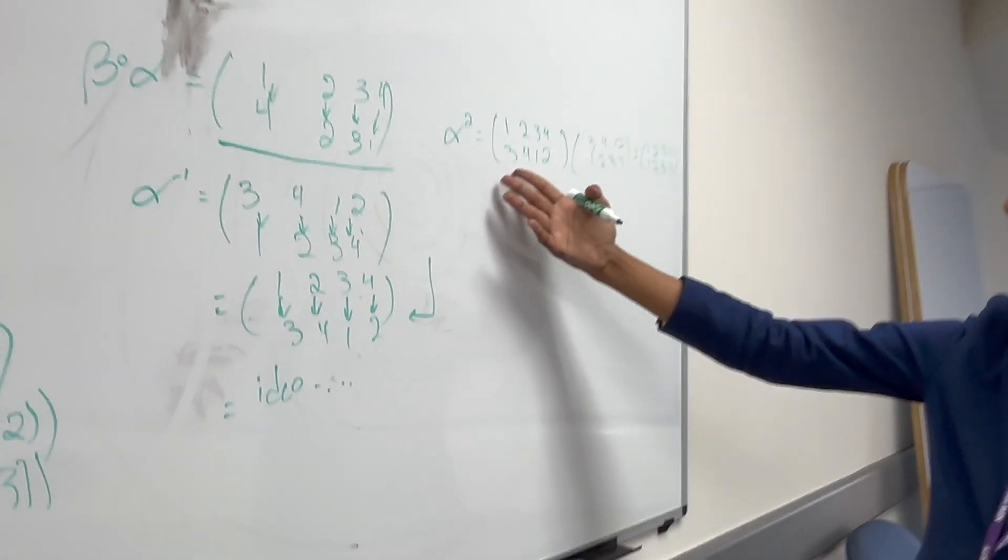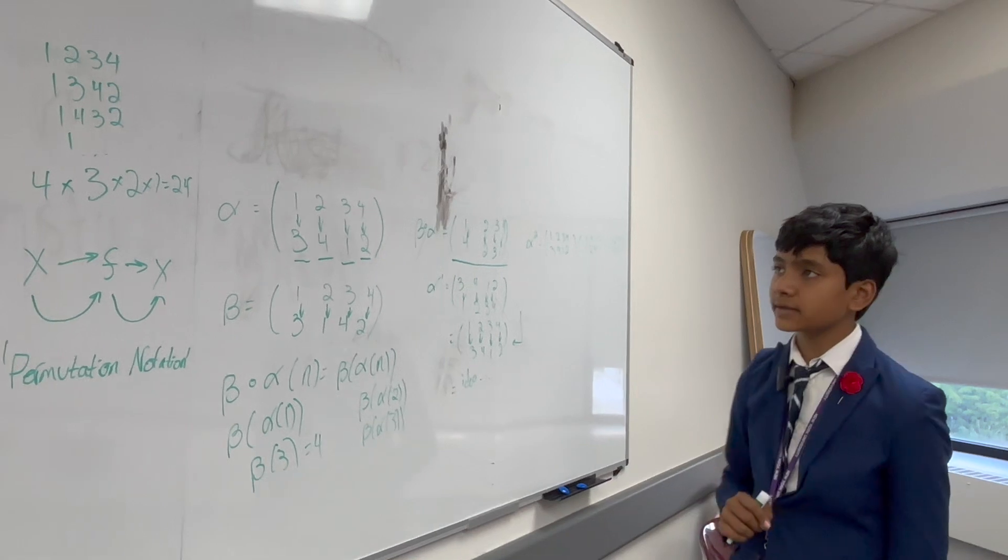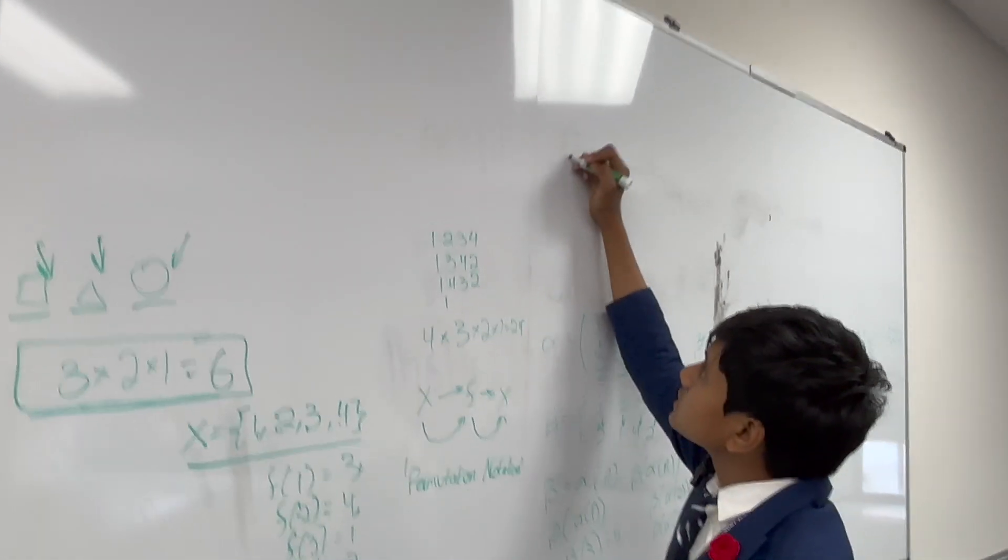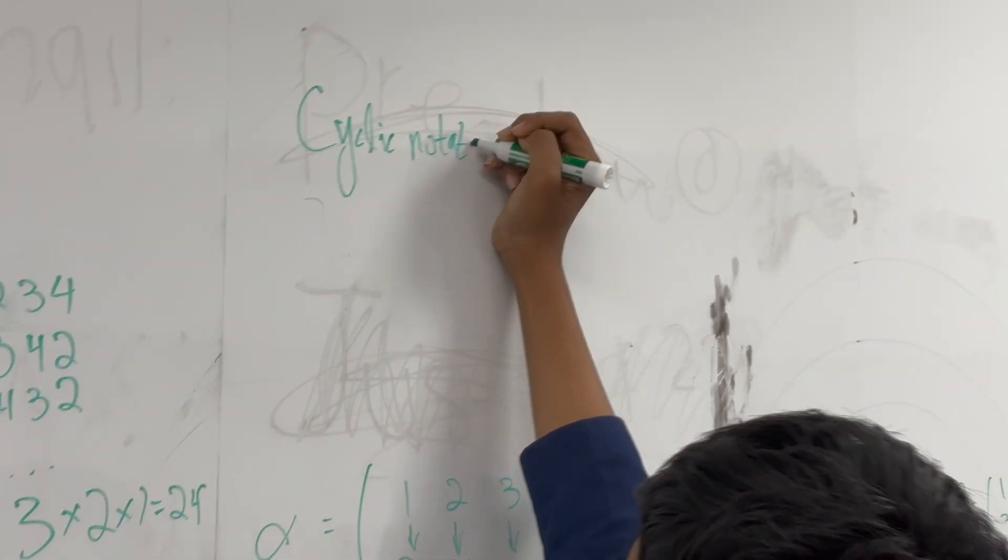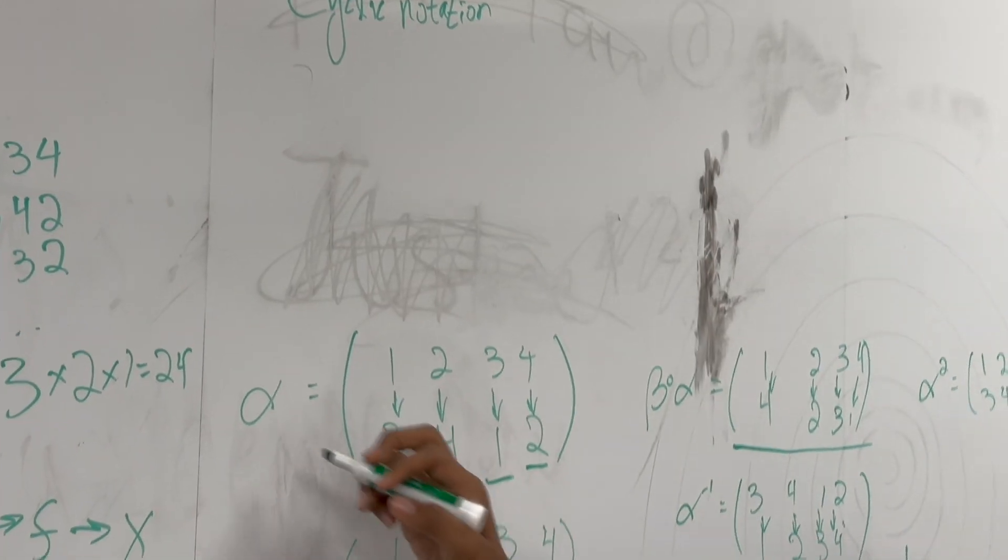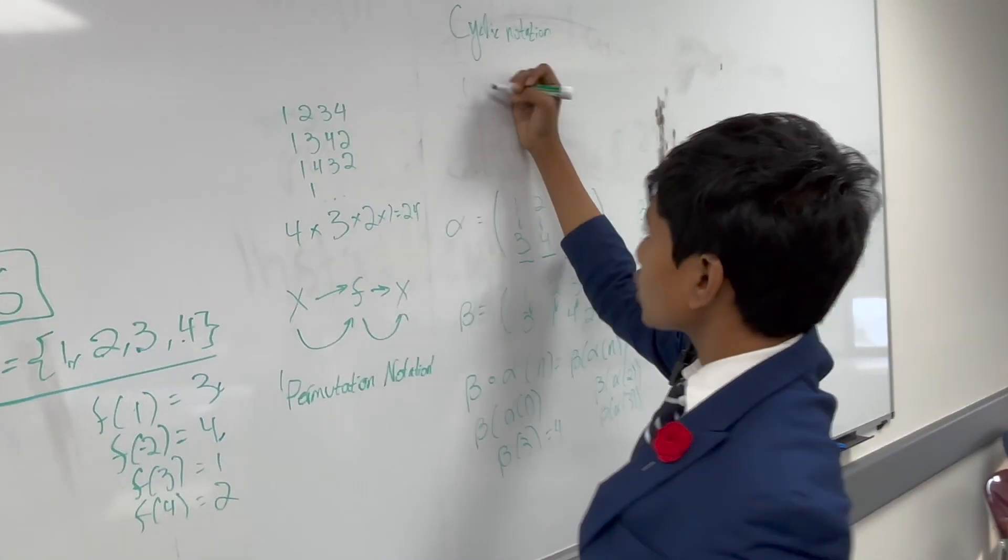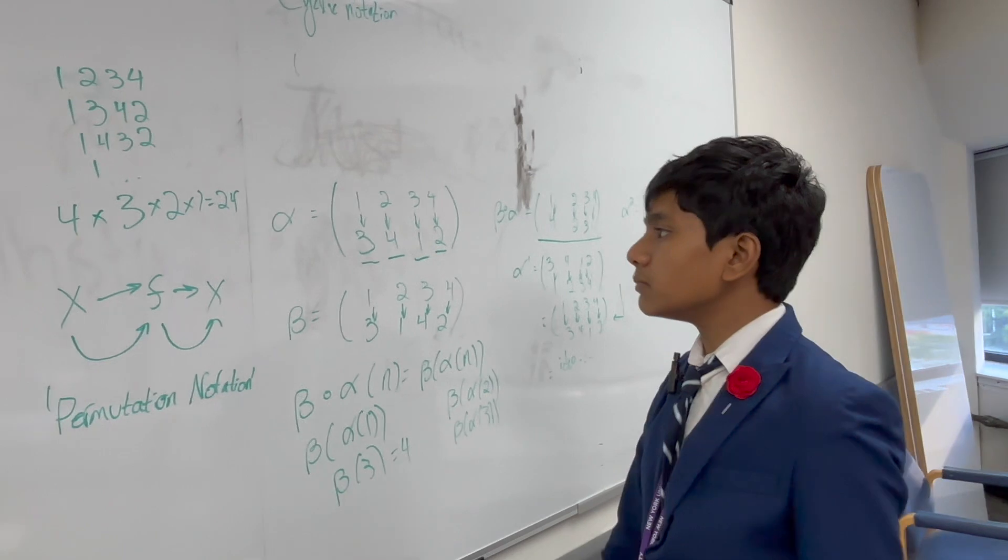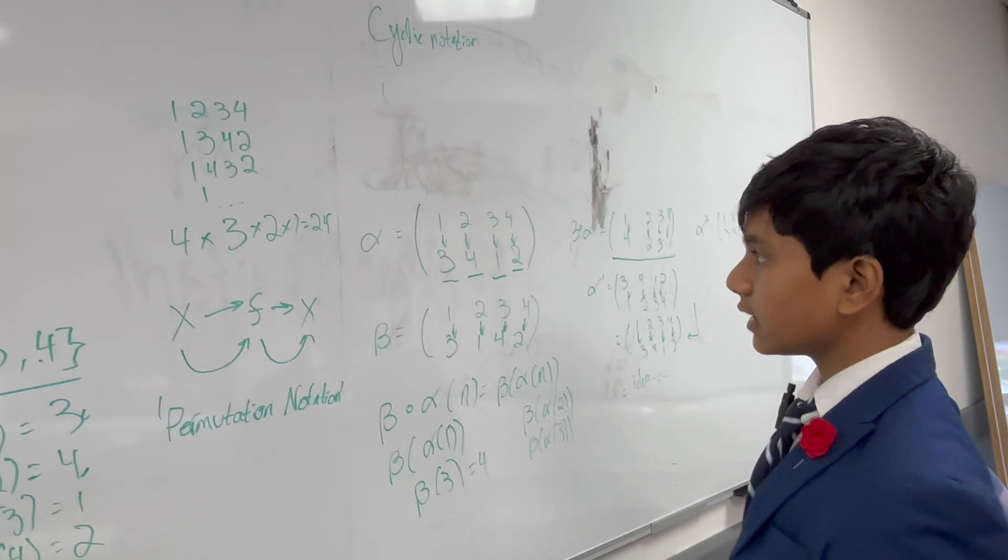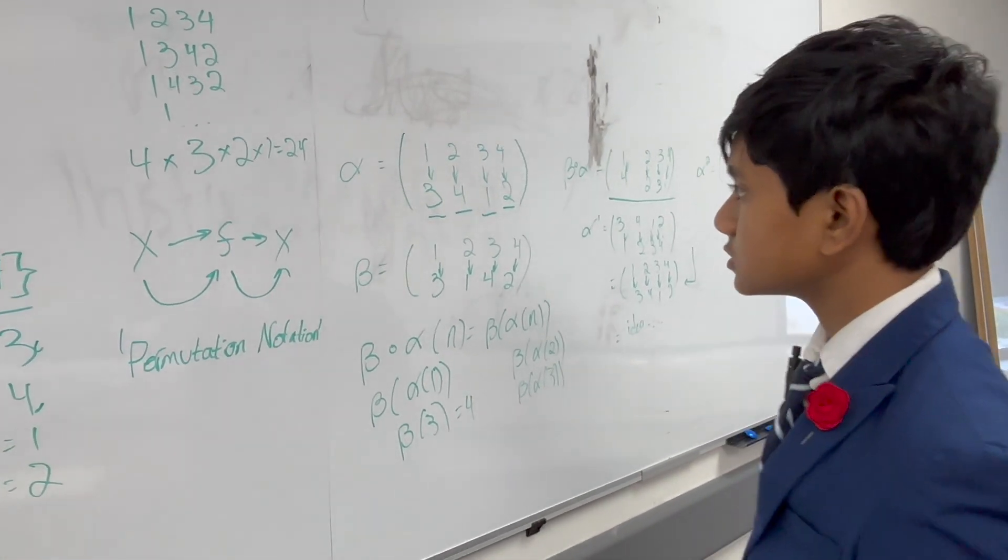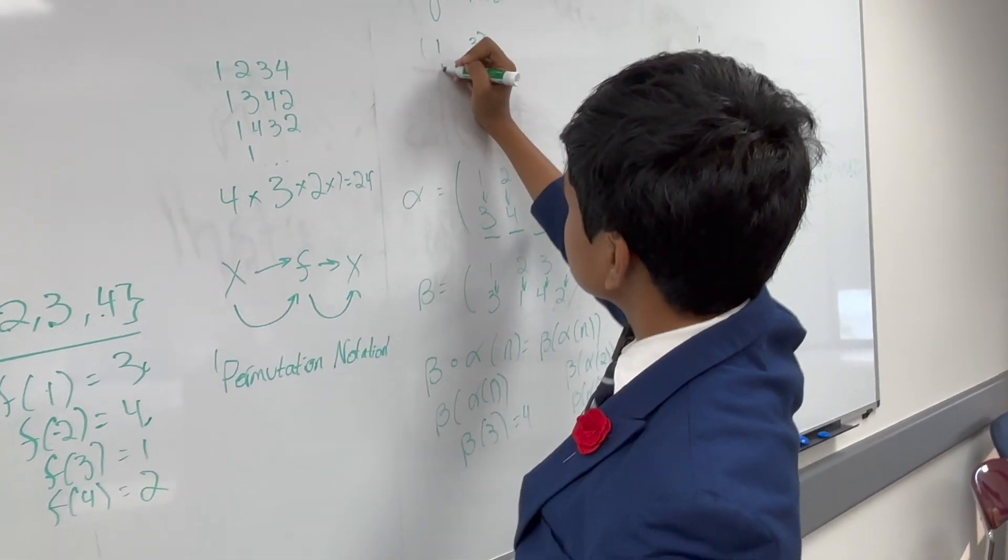Now, this takes a lot of space on the paper, or the whiteboard, in this case. So, what's an easier, more compact notation? Well, we call this the cyclic notation. Now, let's take what we had from before. Alpha, 1 goes to 3, right? So, what I'm going to do, is I'm going to draw the start of a cycle. And, basically, at some point, we know that these are bound to loop over one another. Since there's only a finite amount of elements. So, we're just waiting until it does loop. So, 1 goes to 3. So, we write 1 and 3. And then, 3 goes back to 1. So, we're finished. That's one cycle.